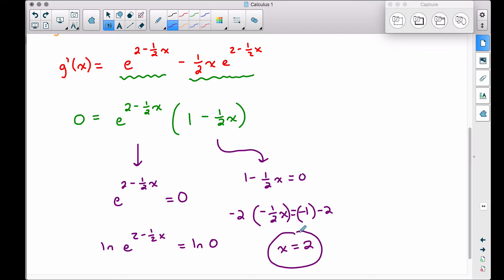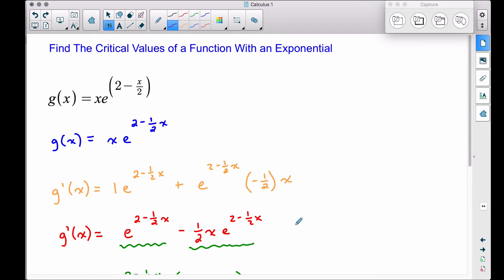This is our critical value. When x is two, this original function g of x is going to have a derivative that's equal to zero, which implies we have a horizontal tangent line. Do we have a maximum? Do we have a minimum? Do we have an inflection point? Who knows? That's what we're going to test out in a future video.